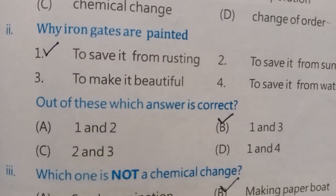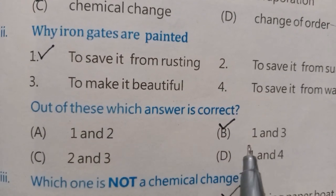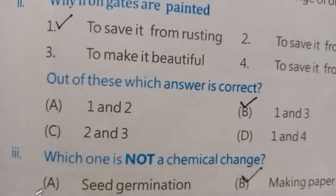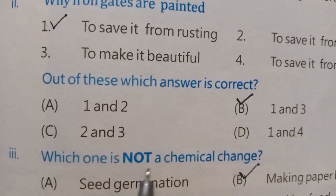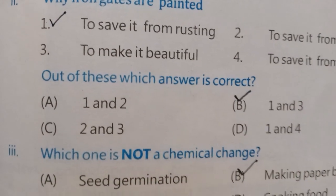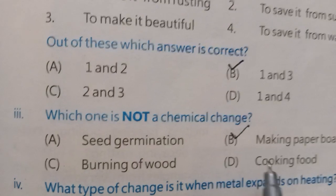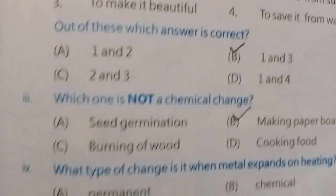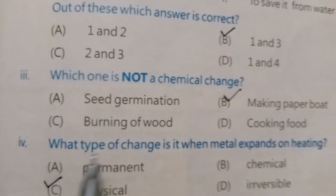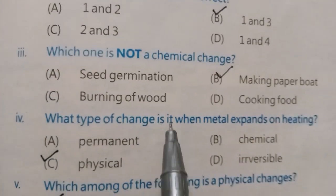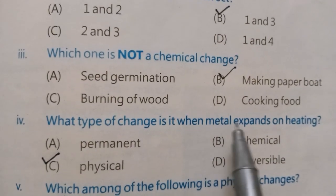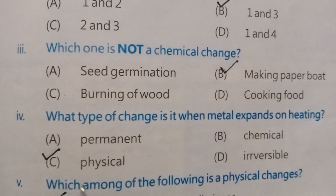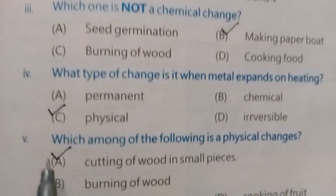Out of these, which answer is correct? The correct answer is one and three. Which one is not a chemical change? The correct answer is making paperboard. What type of change is it when metal expands on heating? The correct answer is physical change.